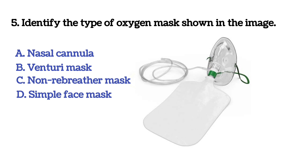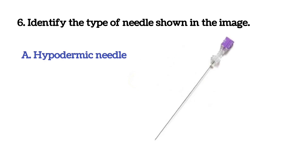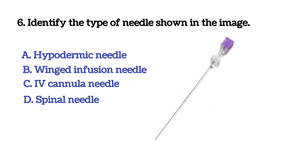Next question: identify the type of oxygen mask shown in the image. Option A: nasal cannula. Option B: Venturi mask. Option C: non-rebreather mask. Option D: simple face mask. The answer is C, non-rebreather mask.